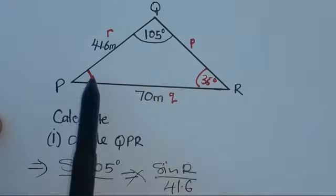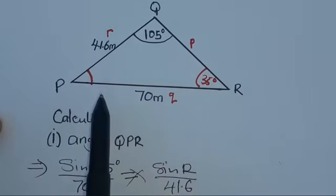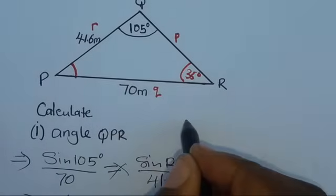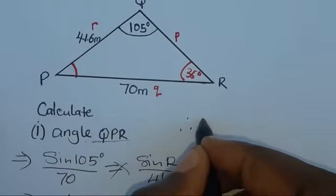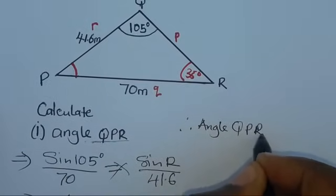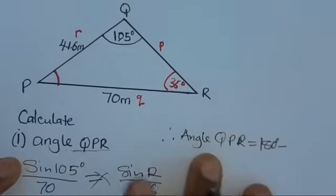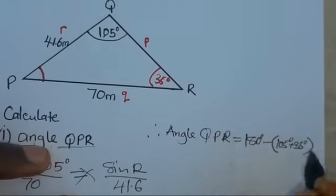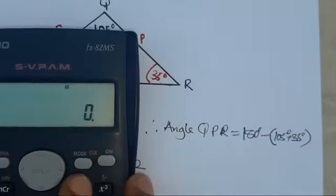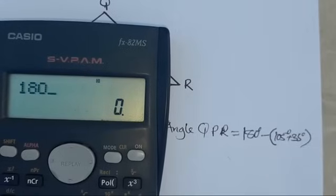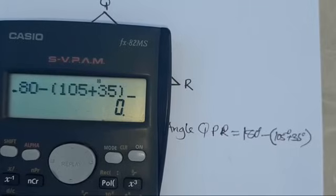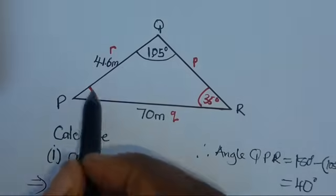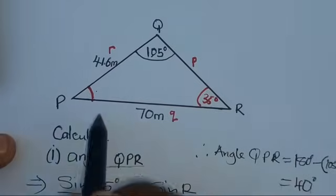Now that we know angle R is 35° and angle Q is 105°, we use the sum of angles in a triangle to find angle QPR. Therefore, angle QPR = 180° − (105° + 35°). Punching this into the calculator: 180 − 105 − 35 = 40 degrees. So angle QPR is 40 degrees.